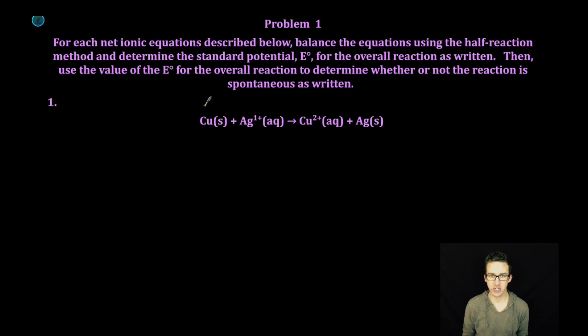Step one is just to write in the oxidation states of each of the things in our equation. Done. Our next step is to write the oxidation and reduction half-reactions. I notice that my copper is being oxidized. It is losing electrons because it goes from the zero oxidation state to the plus two oxidation state.